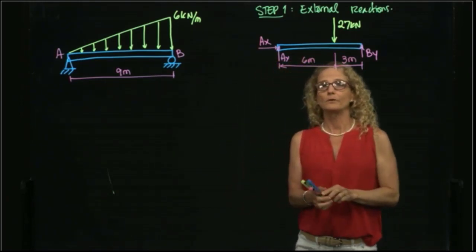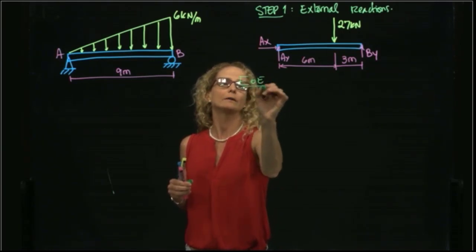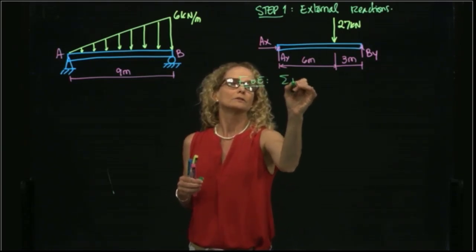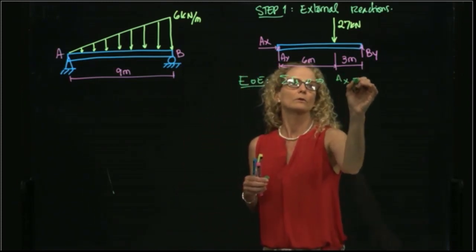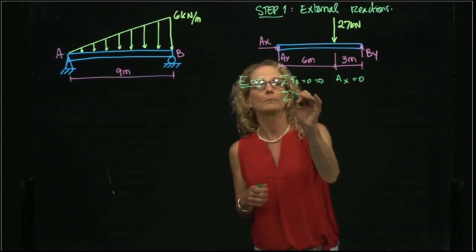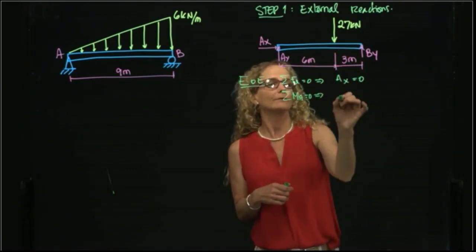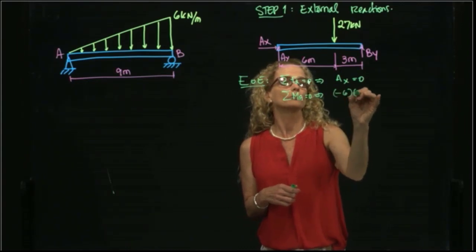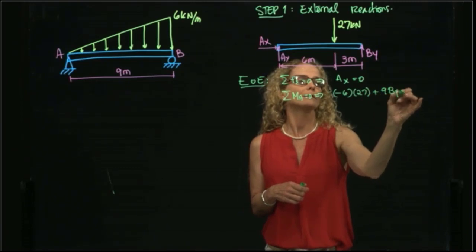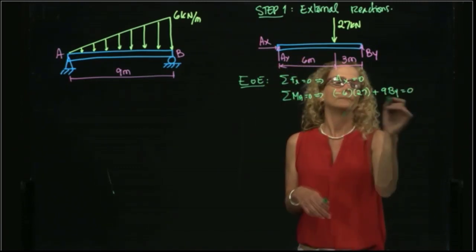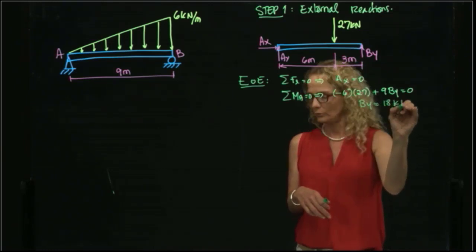Now that we have our free body diagram, we can apply our equations of equilibrium to find the forces. When we add forces in X, we find that there isn't any axial forces. So I take moment with respect to, for example, point A: negative 6 times 27, plus 9 times BY equals 0.